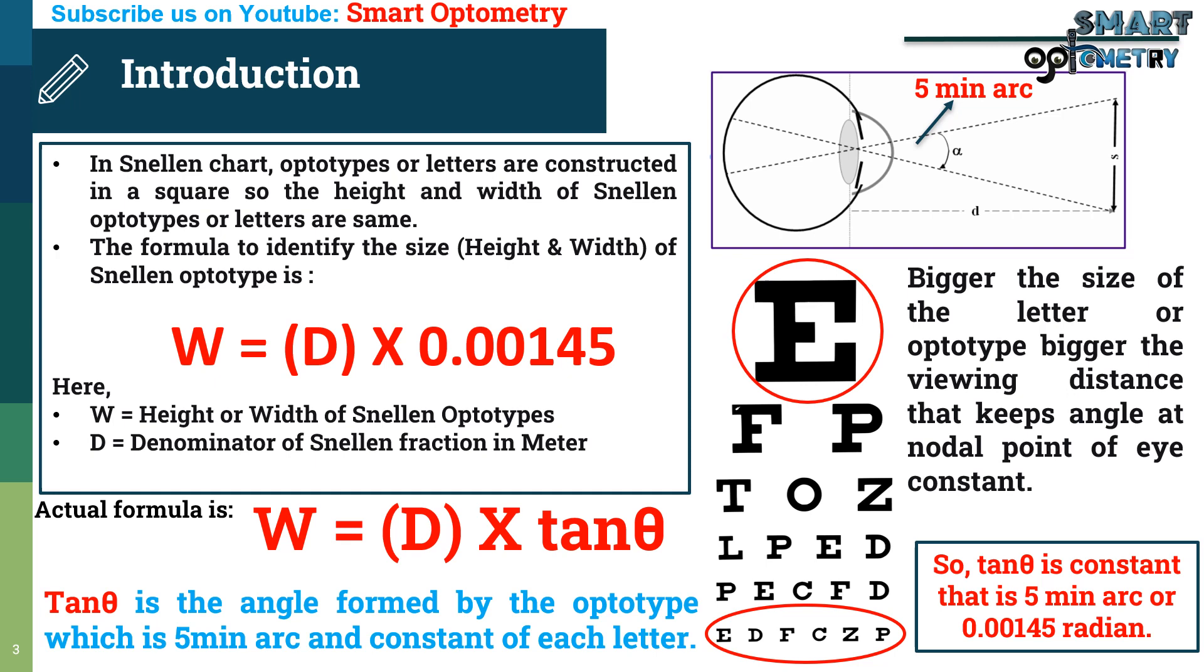That's why in the formula I put 0.00145 instead of tan theta so that you don't have to convert 5 minute arc into radian each time. Let's see some example.